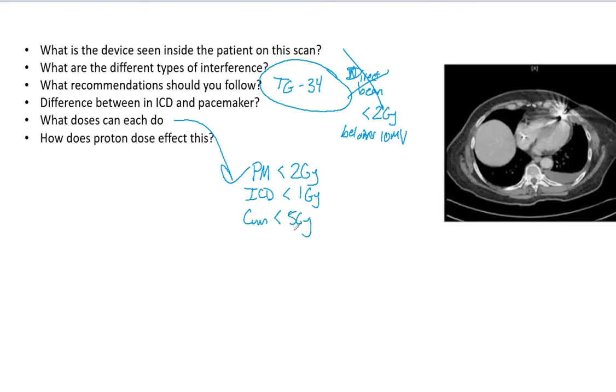So the protons, how does that affect these pacemakers? You don't want any dose rate greater than 800 centigrade per minute, because that will cause 70% failures. Neutrons cause devastating damage and protons are dangerous because of the recoil neutrons. So something you have to be very careful about.